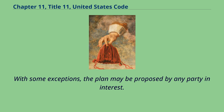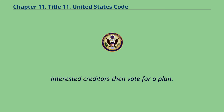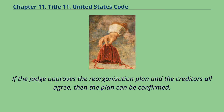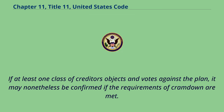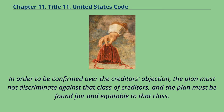With some exceptions, the plan may be proposed by any party in interest. Interested creditors then vote for a plan. If the judge approves the reorganization plan and creditors all agree, then the plan can be confirmed. If at least one class of creditors objects and votes against the plan, it may nonetheless be confirmed if the requirements of cramdown are met. In order to be confirmed over the creditors' objection, the plan must not discriminate against that class of creditors, and the plan must be found fair and equitable to that class.